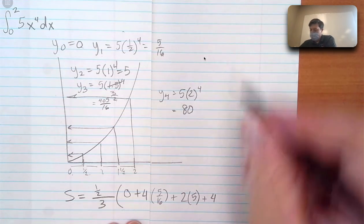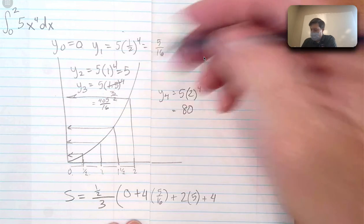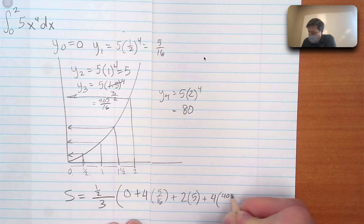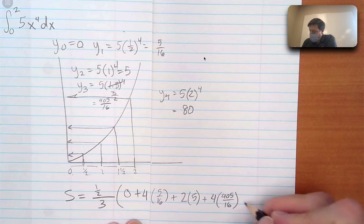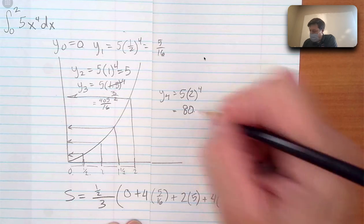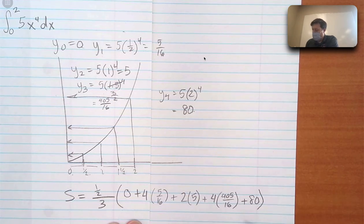Plus 4. It goes 4, 2, 4. In this case, it's 405 over 16. Plus the singleton, 80. No multiplication on the ends.